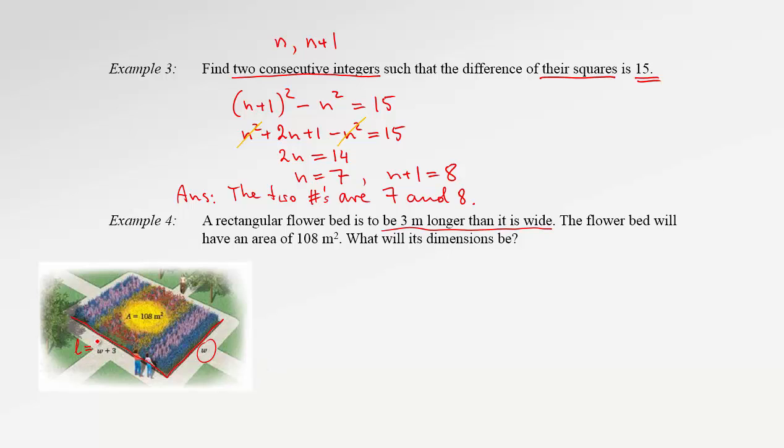So, instead of length, we're going to use the expression W plus 3. Now, we also know that the area of this rectangle is 108.